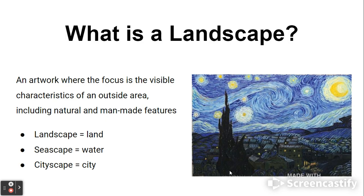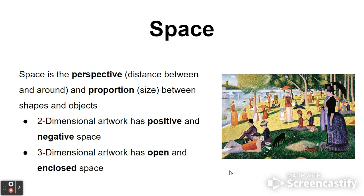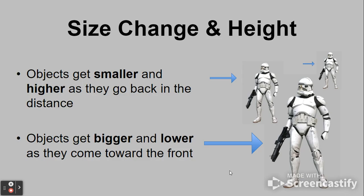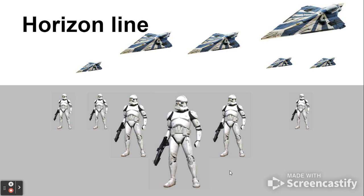We also define landscape. Landscape is an artwork that focuses on the visible characteristics of an outside area and can be natural or man-made. We also define space as the perspective, which is distance between and around, and proportion, which is size between shapes and objects in an artwork. We also defined overlap as well as size change and height, which were critical for your art making activity.